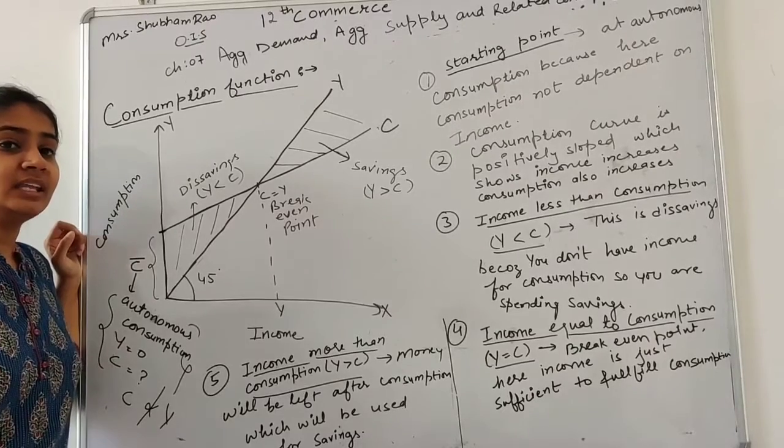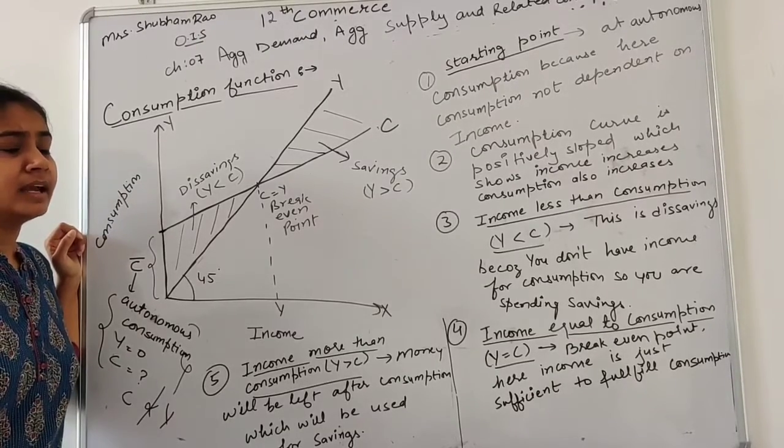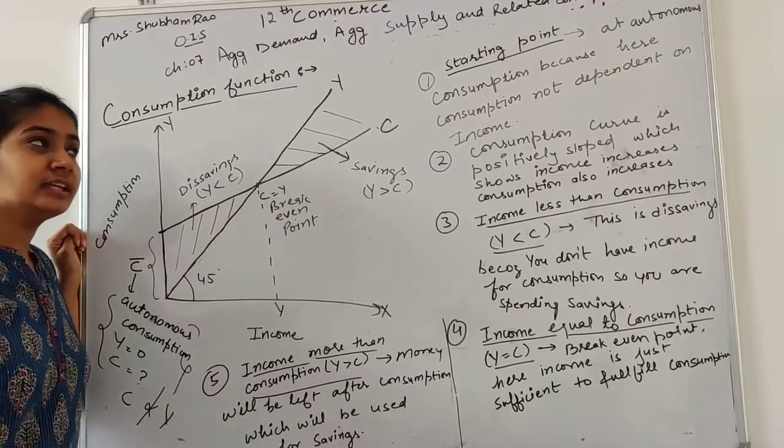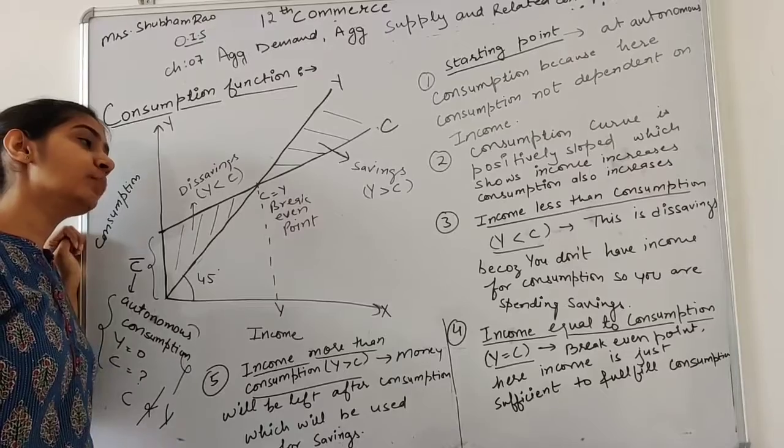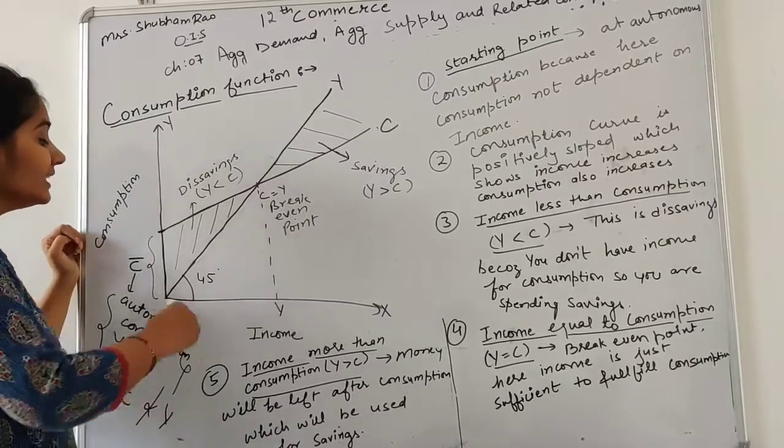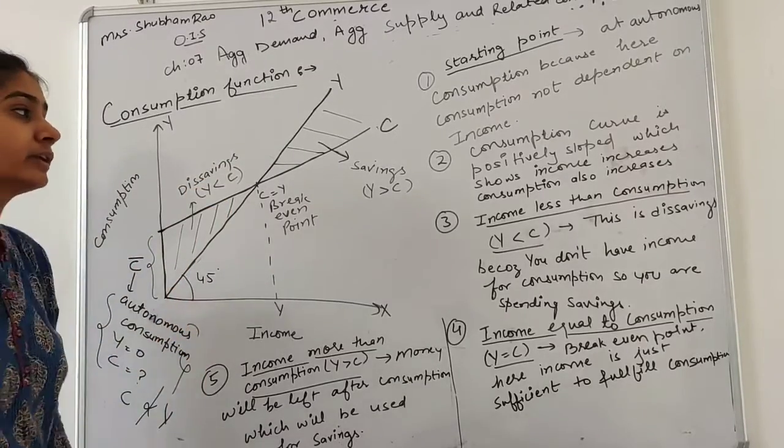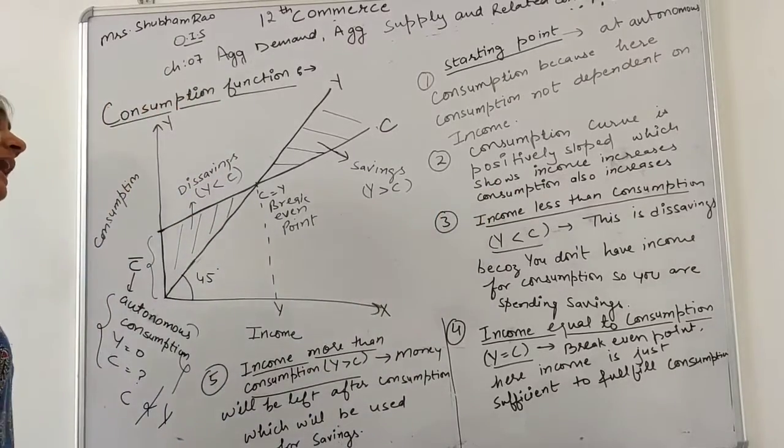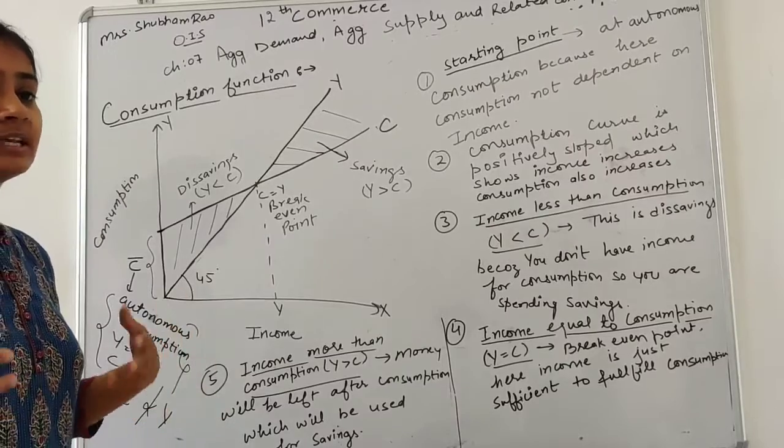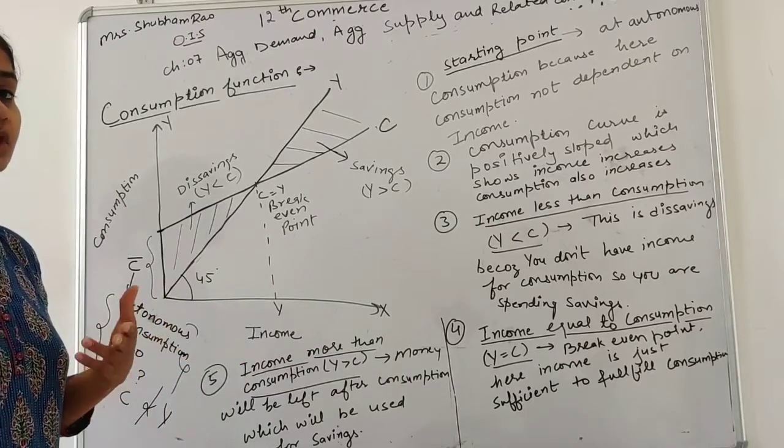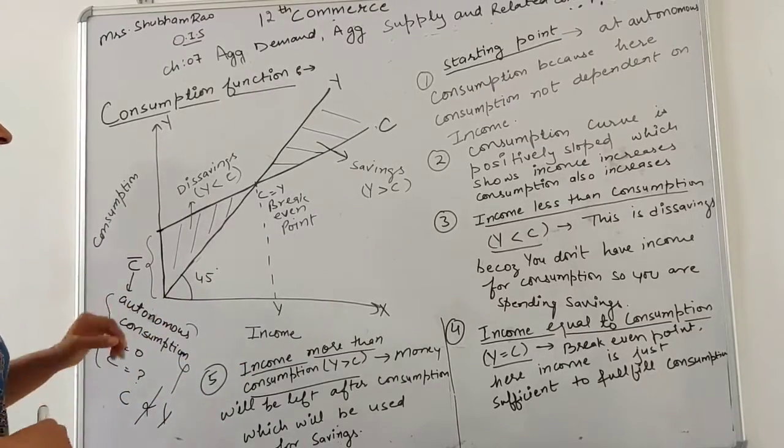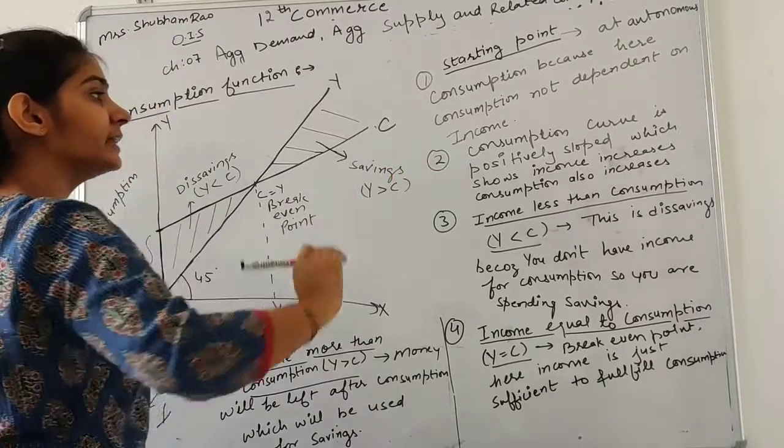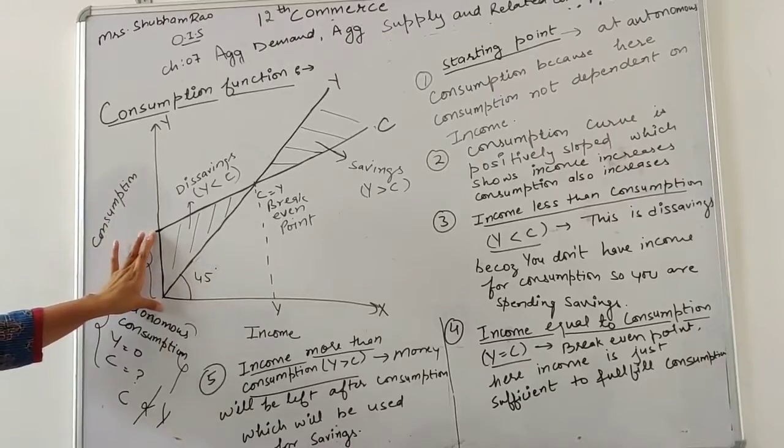That's why, because the consumption is dependent to income. When we proceed, what is happening? Income increases, consumption is increasing. So we see as income increases there is increase in consumption. Just like our income goes up, our consumption goes up.